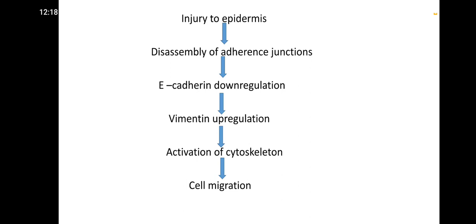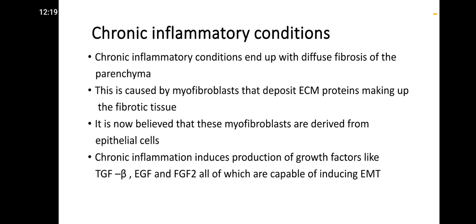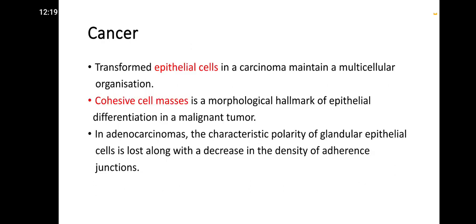In wound healing, re-establishment of a competent epithelial layer requires proliferation and differentiation of epithelial cells, which is time-consuming. Rapid recovery is favored by migratory behavior of resident epithelial cells. After injury to the epidermis, disassembly of adherens junctions occurs, E-cadherin downregulation occurs, and vimentin upregulation occurs, activating the cytoskeleton for cell migration. In chronic inflammatory conditions, diffuse fibrosis of the parenchyma is caused by myofibroblasts derived from epithelial cells. Chronic inflammation induces growth factors like TGF-beta and EGF, which induce EMT.